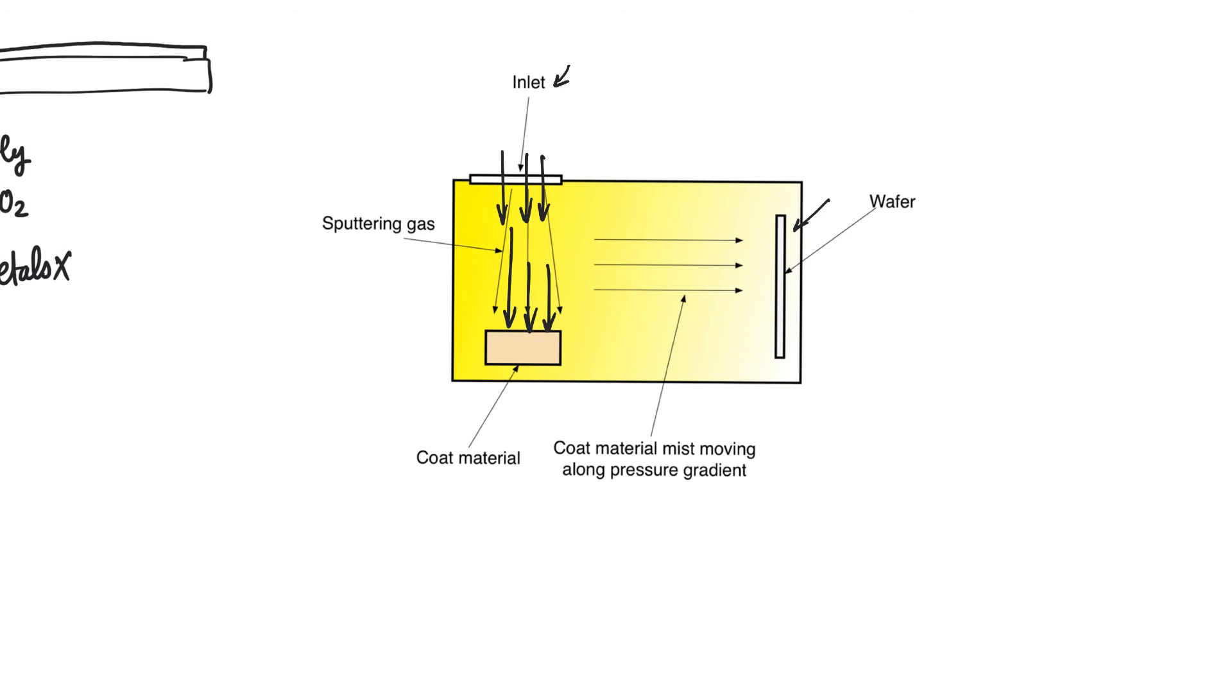If we are depositing a layer of aluminum, then this block will be aluminum. If it's copper, then this block will be copper. When the high velocity gas particles hit the coat material, they will cause atoms of this material to detach and form an aerosol or mist in the room. We'll have very small particles of the coat material forming an aerosol in the room just because of the force of impact from the air, from the gas that is hitting it.